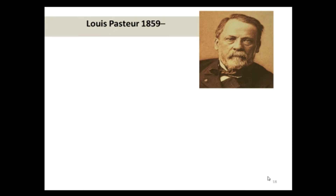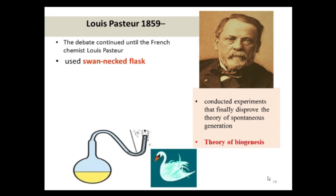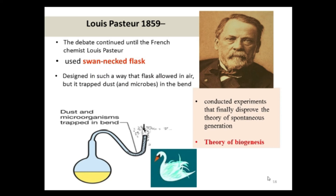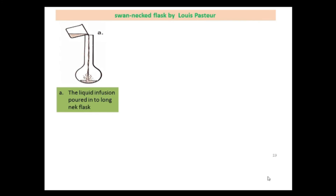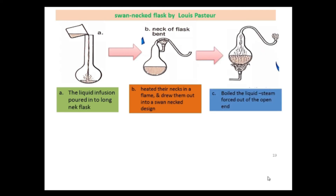The debate continued until the French chemist Louis Pasteur conducted a set of experiments that finally disproved the theory of spontaneous generation, thereby proving the theory of biogenesis. In his experiment he used a swan-necked flask — a curved-end flask shaped like the neck of a swan — designed so that it allowed the passage of air but trapped dust and microbes in the bend. The liquid infusion was poured into a long-necked flask and the neck was heated and drawn out into a swan-neck design.